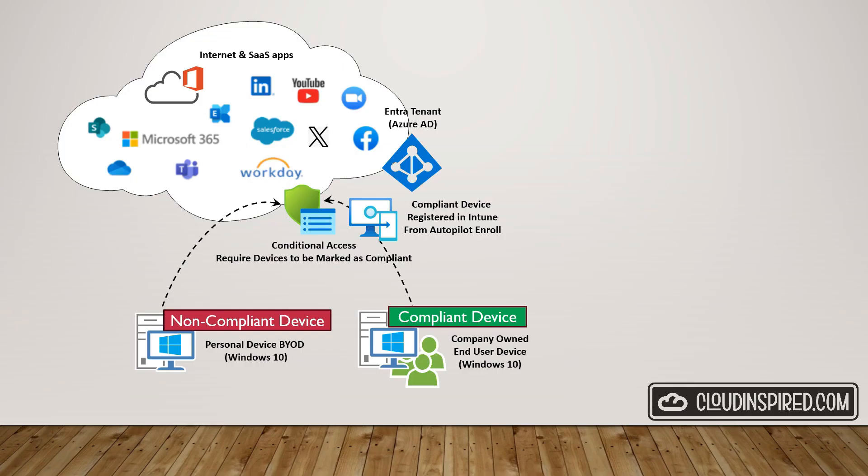Hello and welcome everyone. We all know the problem where in a company we have our compliant corporate registered devices which are approved, secured, locked down and registered in Intune. But how do we stop non-compliant personal devices from accessing our company applications and data which are not secure?